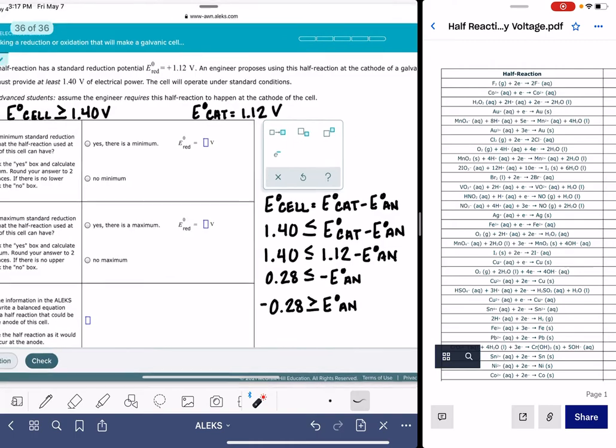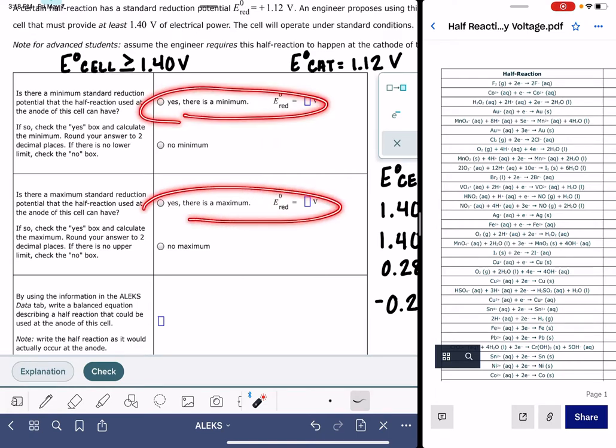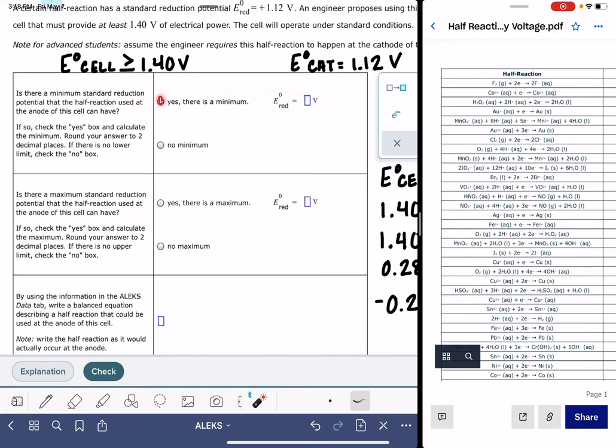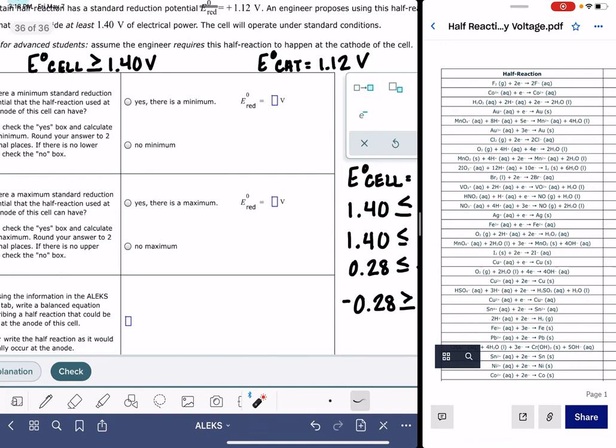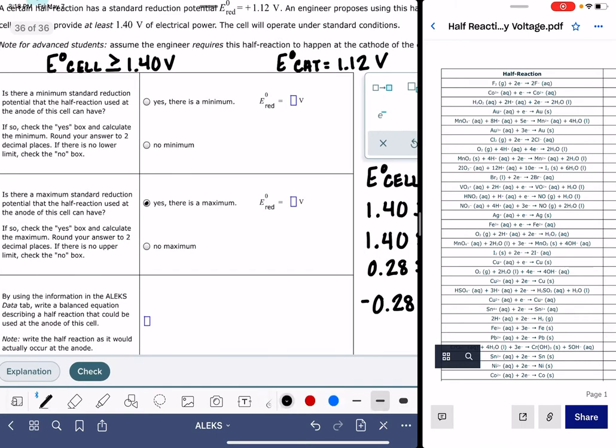Let's take that information and go look at the questions that ALEX is asking us. The first two questions are asking if our anode has a minimum or a maximum. You're only going to check yes for either this box or this box. You can't have both a minimum and a maximum. For us, we're learning that our voltage has to be either equal to or less than negative 0.28, which means that we have a maximum voltage. We have a maximum, and that maximum voltage is negative 0.28. We don't have a minimum voltage.